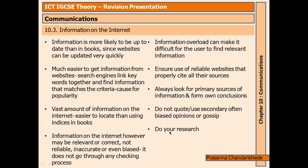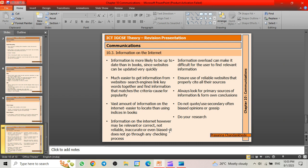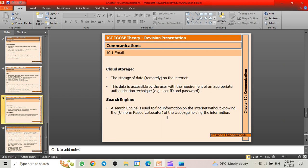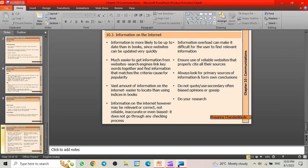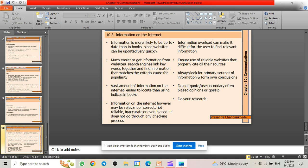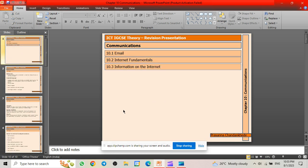Ensure use of reliable websites that properly cite their sources. Always look for primary sources of information and form your own conclusions — do not rely on secondary, often biased opinions or gossip. Also check when the website was last updated so you know how recent the information is. Remember that if a URL ends in .gov, it's a government site and most likely very secure. The URL stands for Uniform Resource Locator. That'll be all for today — make sure to like, share, and subscribe. See you in the next video!